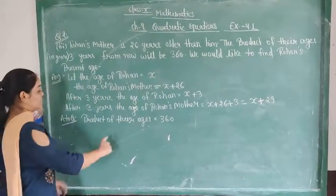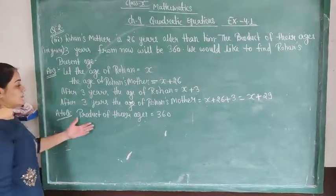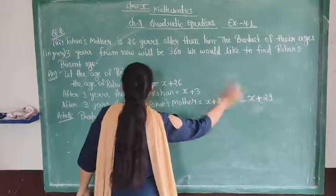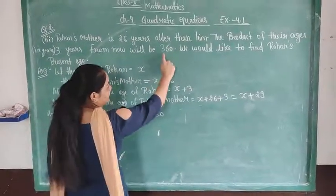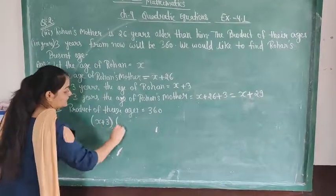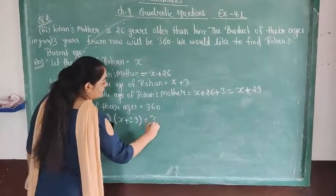The product of their ages is equal to 360. So after 3 years, the product is x plus 3 multiplied by x plus 29 is equal to 360.